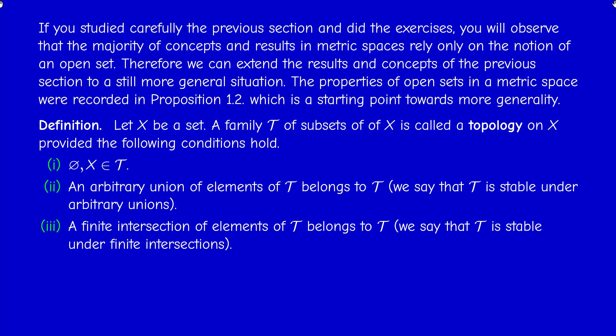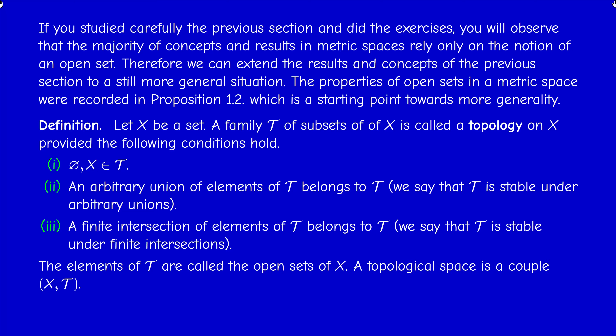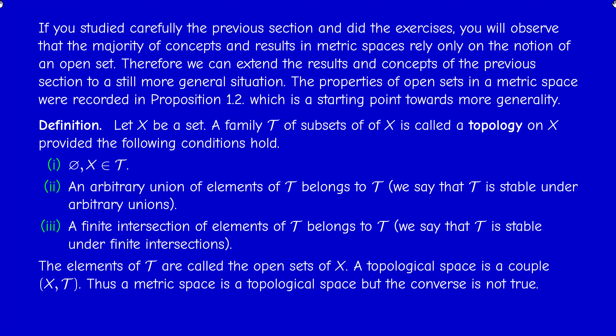In general, if we have a set X, a family of subsets of X satisfying these three properties is called a topology. The elements of the topology are called open sets by extension. A topological space is a set equipped with a topology, and therefore a metric space is a particular kind of topological space.